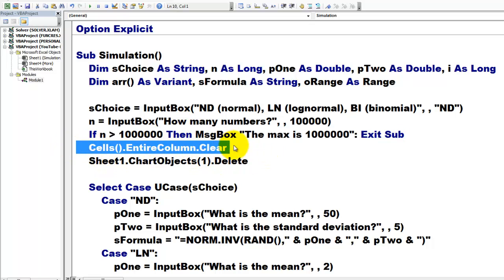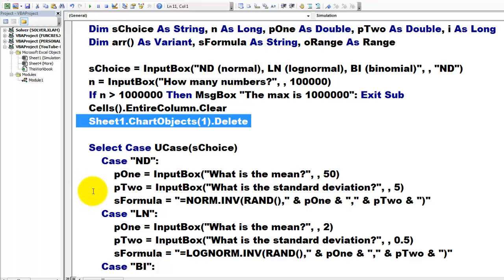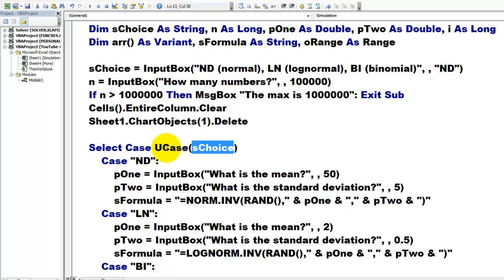We clear everything on the sheet that is open. We delete the only chart object that is in there from the previous run. Then we are going to create formulas based on sChoice, and I made it not case-sensitive by using the UCase function.